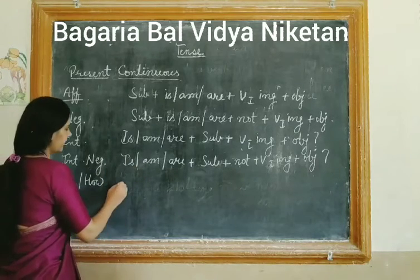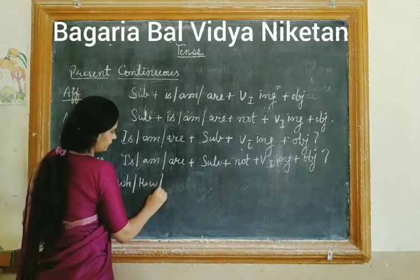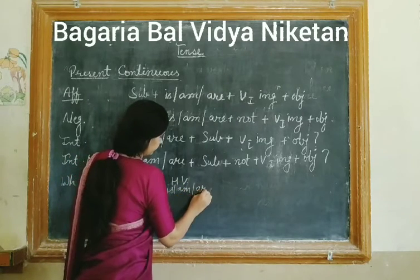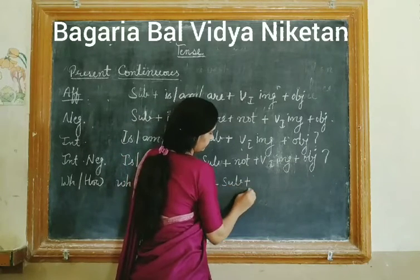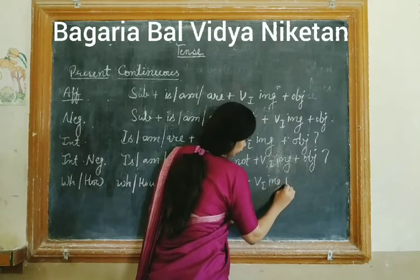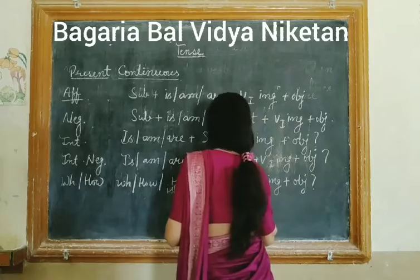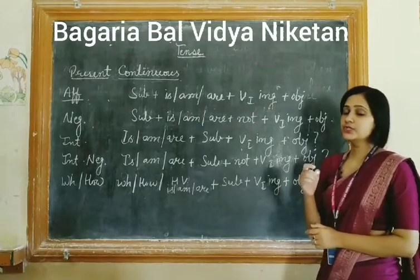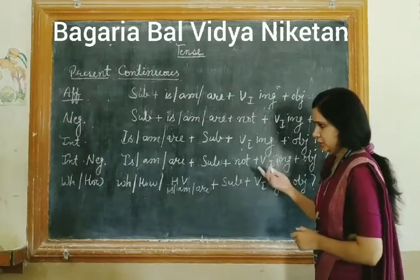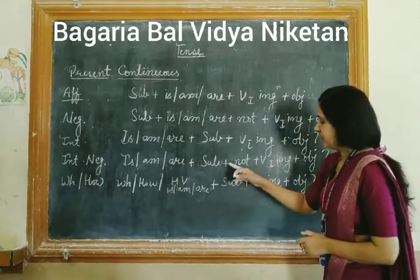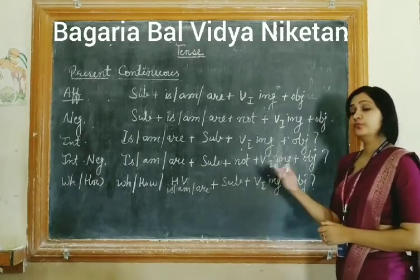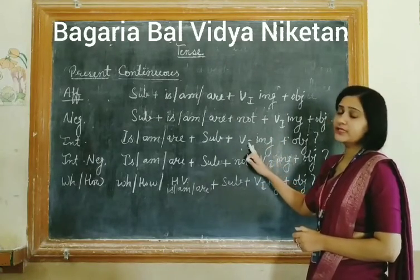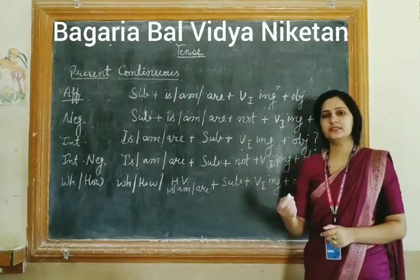Phir aata hai WH-word. The structure is: WH-word / How + helping verb (is/am/are) + subject + verb's first form with -ing + object + question mark. For example: 'What are you doing nowadays?' — Aaj kal tum kya kar rahe ho? 'How much are you interested in hobby classes?' — Tum kitne interested ho hobby classes mein? Jab structure yaad kar lete hain, toh sentences form karna bahut easy ho jata hai.